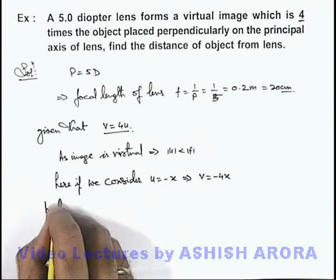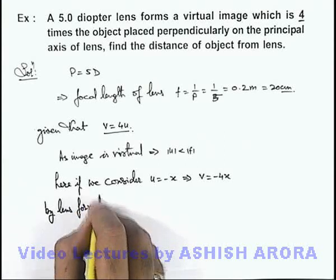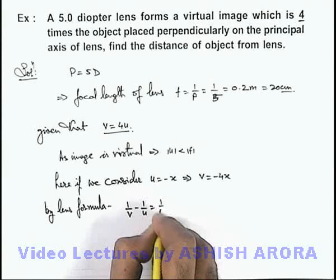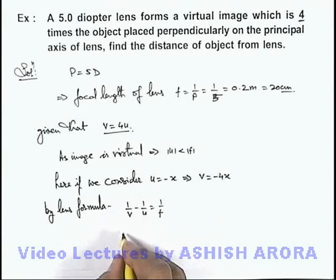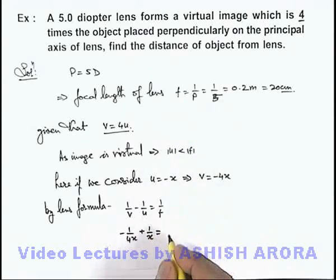So by lens formula here directly we can write 1 by v minus 1 by u equals 1 by f. On substituting the values we can see this will be minus 1 by 4x plus 1 by x equals 1 by 20, since the focal length is 20.